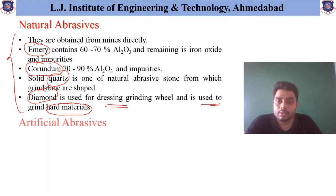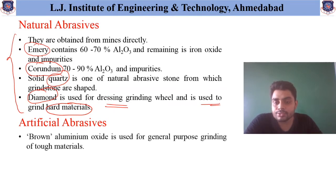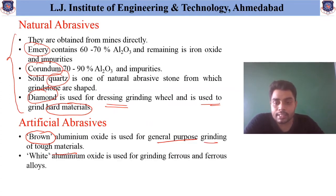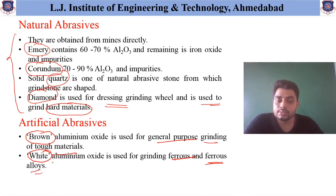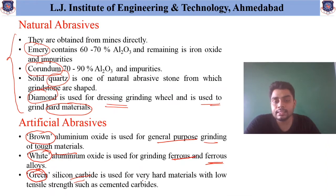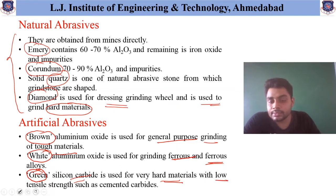The artificial abrasives most widely used are: first, brown aluminum oxide, which is used for general purpose grinding of tough materials. Next, white aluminum oxide, which is used for grinding ferrous materials and ferrous alloys. Green silicon carbide is used for very hard materials that have very low tensile strength, such as cemented carbide.